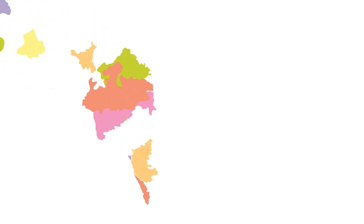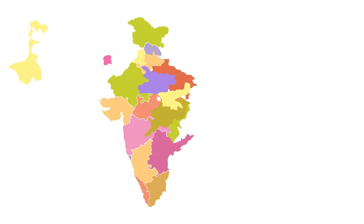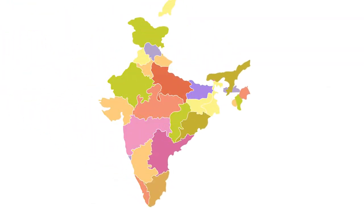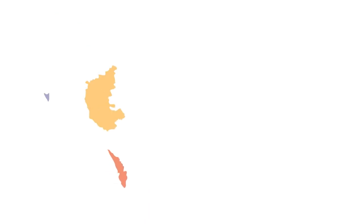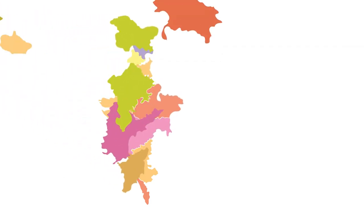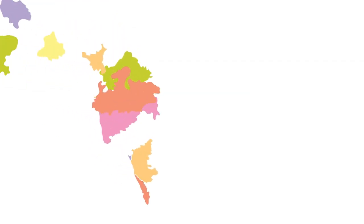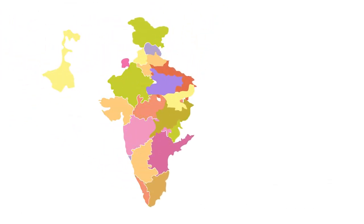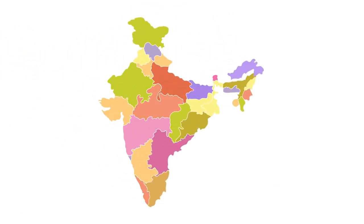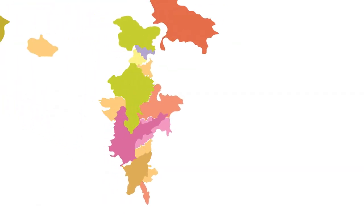Partition of India, 1947. The partition of British India in 1947 resulted in the creation of two independent nations, India and Pakistan. The partition was based on religious lines, with predominantly Muslim regions becoming Pakistan and the rest of British India forming India. The decision led to one of the largest migrations in human history, with millions of Hindus, Muslims, and Sikhs forced to leave their homes and relocate across the new borders. The partition also sparked widespread violence and communal riots, resulting in significant loss of life and displacement.